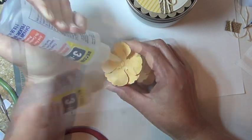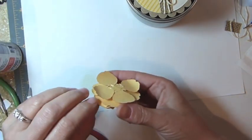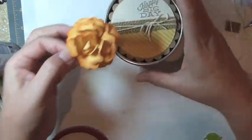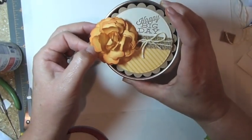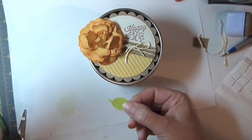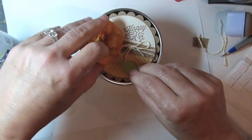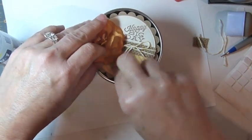Apply adhesive to the back of your flower and adhere to the top of your gift tin. As your final step, tuck the leaves under the flower and secure with adhesive.